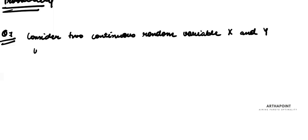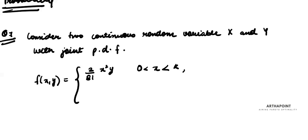Take the first question. It says consider two continuous random variables x and y with joint probability density function, which is given as 2 by 81, x square y for x between 0 to k and y between 0 to k and 0 otherwise.